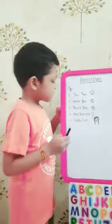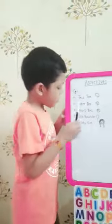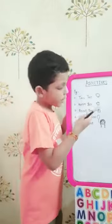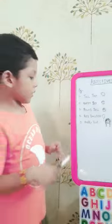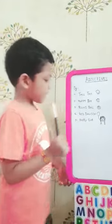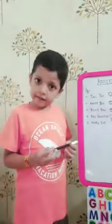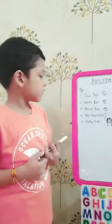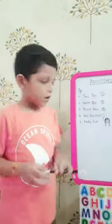The third example is round ball. Round is an adjective and ball is a noun. The fourth example is red balloon. Red is an adjective and balloon is a noun.